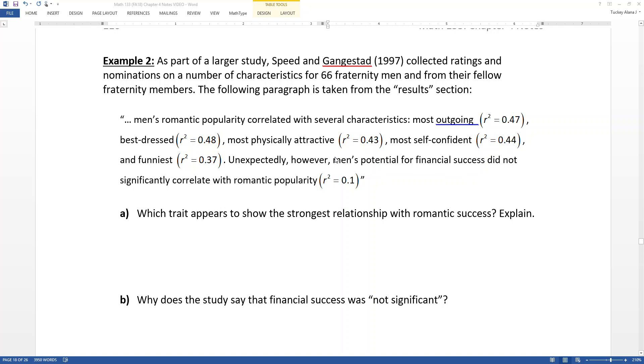So let's look at this example. As part of a larger study, Speed and Gangestad from 1997 collected ratings and nominations on a number of characteristics for 66 fraternity men and from their fellow fraternity members. The following paragraph is taken from the results section of their paper.